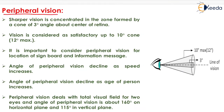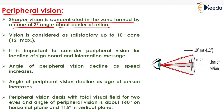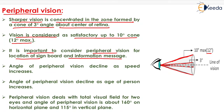The next factor is peripheral vision, which refers to the total visual field of an eye. Sharper vision is concentrated in the zone formed by a cone of 3 degrees about the center of the retina. Vision is considered satisfactory up to a 10-degree cone and maximum at a 12-degree cone. It is important to consider peripheral vision for the location of sign boards and information messages on a road section.